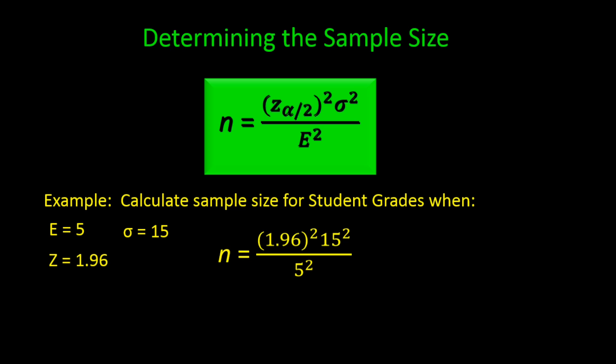1.96 squared times 15 squared divided by 5 squared, and that gives us 864.36 divided by 25, which is 34.57. So we would need to take a sample size of 35.